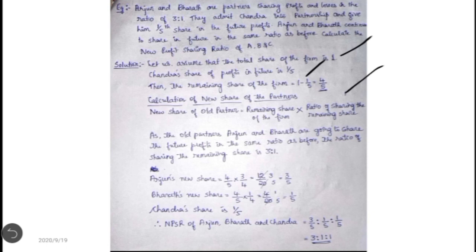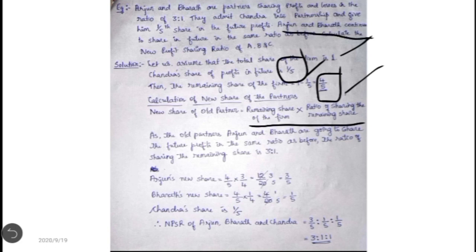The remaining 4/5 should be distributed between Arjun and Bharat. The new share of the old partners equals remaining share of the firm multiplied by the ratio of sharing the remaining share. Since it is given that Arjun and Bharat share future profit in the same ratio as before — that is 3:1 — the ratio of sharing the remaining share is 3:1, meaning their shares in the remaining are 3/4 and 1/4 respectively.